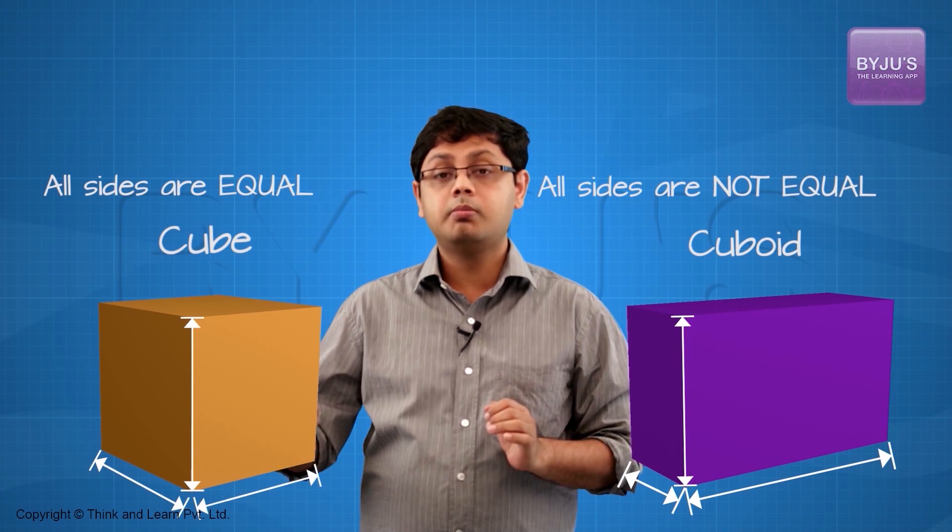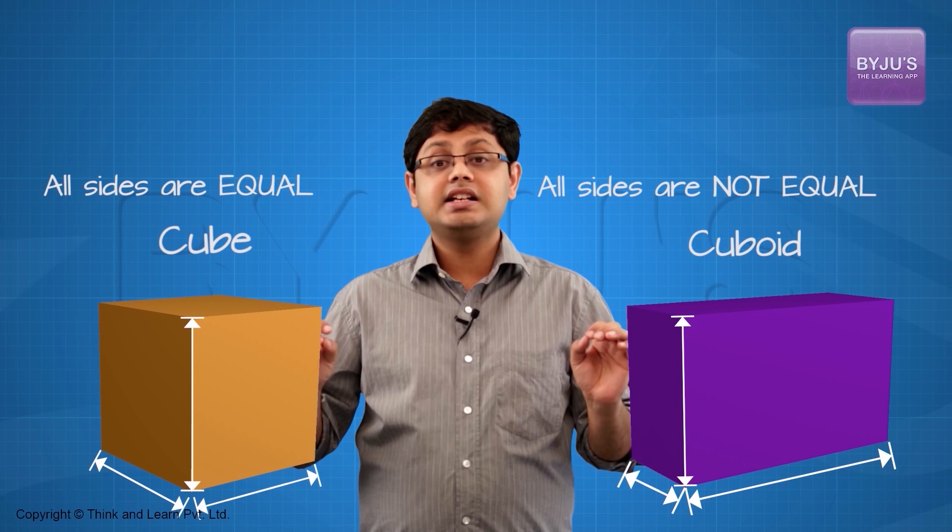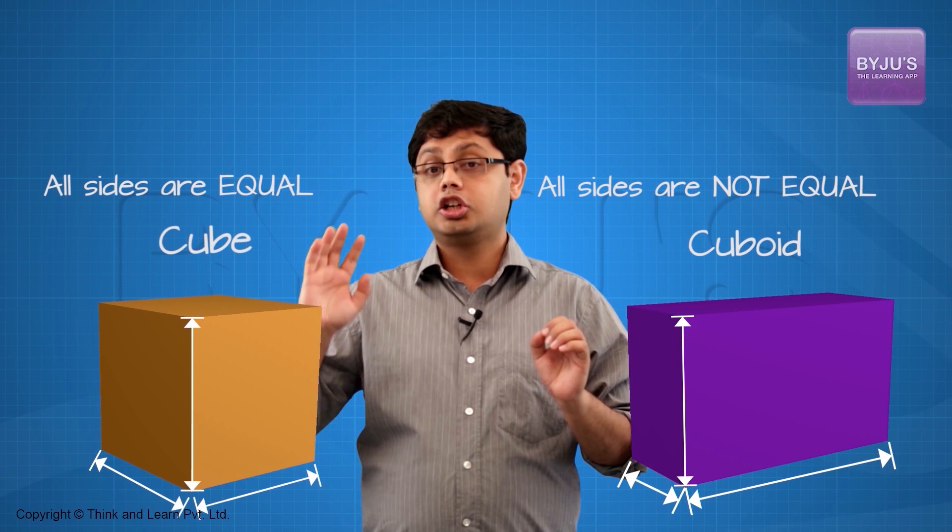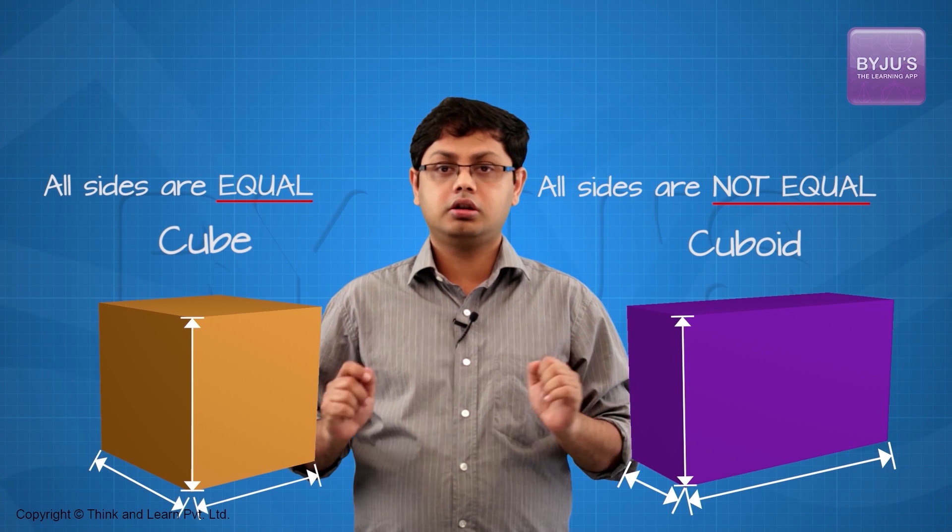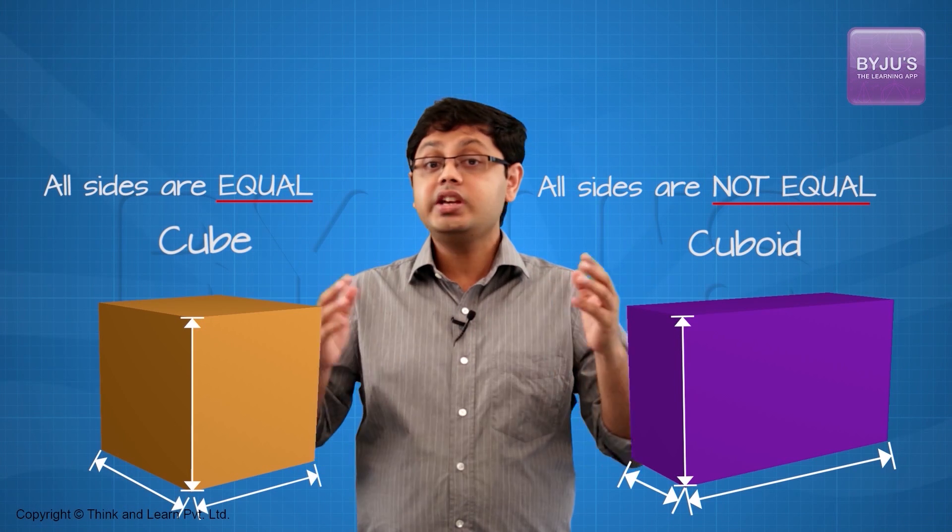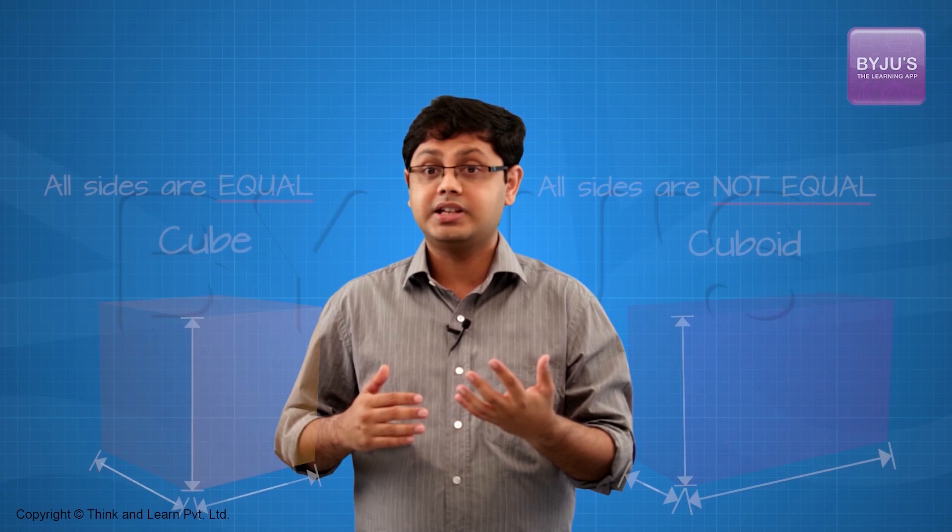The difference between a cube and a cuboid is that all the sides in a cube are equal but in a cuboid, they are not. See it is so easy to create 3D objects. Wanna try one more? Extend a circle by some distance. What you get is called a cylinder.